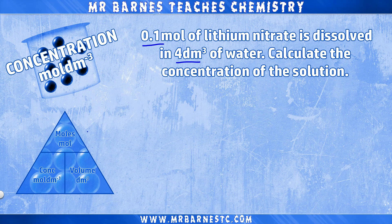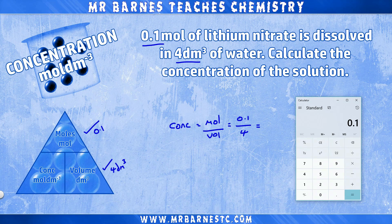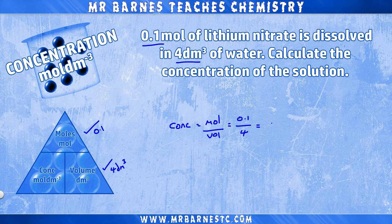We have the moles — 0.1 — and the volume, which is 4 decimetres cubed. So the calculation is moles divided by volume, which is 0.1 divided by 4, which comes out to 0.025 moles per decimetre cubed.